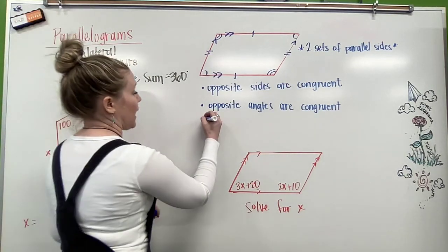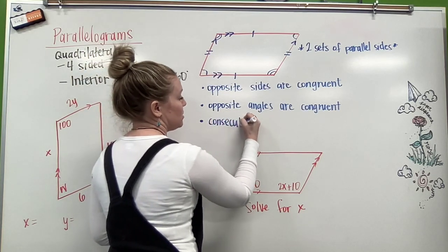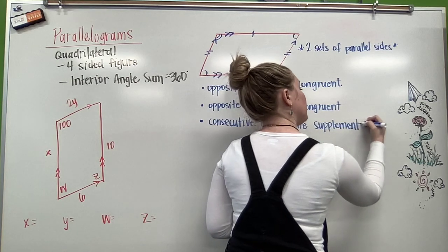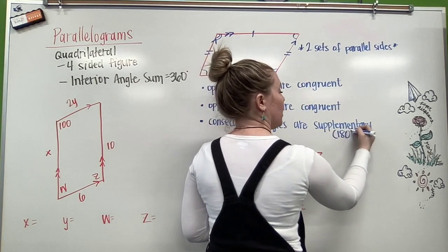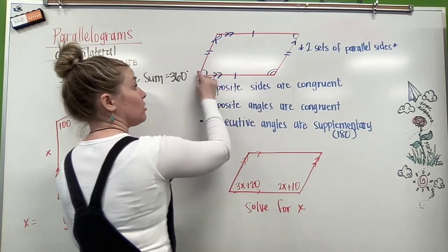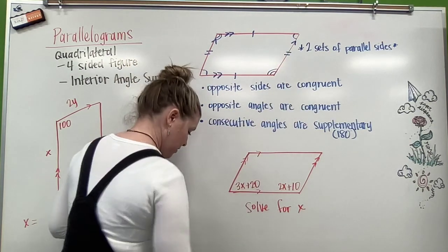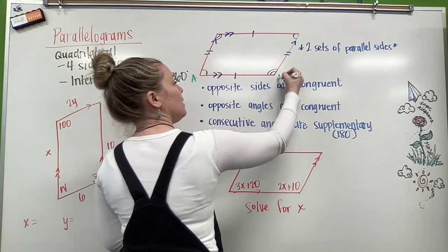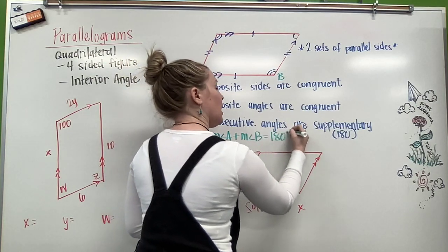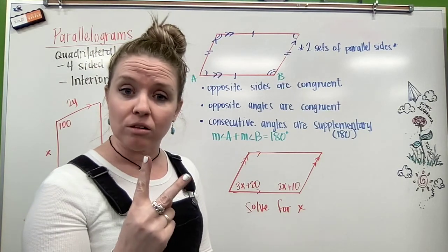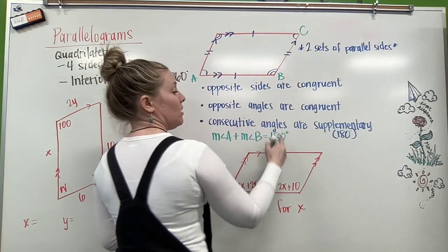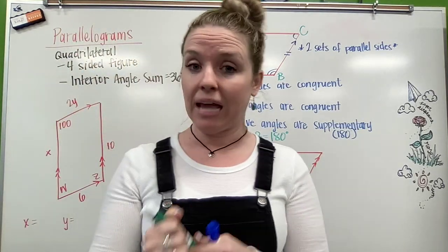And our last property for our parallelograms is our consecutive angles are supplementary. If you remember what supplementary means, supplementary means they're going to add up to 180 degrees. Consecutive angles means they're in a row, right next to each other. So this angle and this angle are consecutive. This angle and this angle are consecutive. So if I were to come in and give these names, call this A and B, I know the measure of angle A plus the measure of angle B equals 180 degrees. Our two consecutive angles are supplementary. We also know if this is B, we'll call this side C. B and C are consecutive, so they're also supplementary. Three properties.